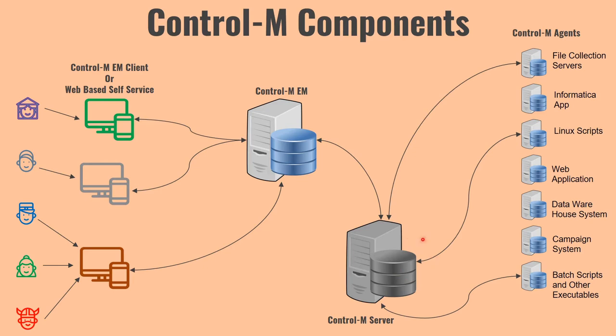Control-M Server is the heart of processing — it is the engine that takes care of managing and ensuring that all jobs which are supposed to run at a specific time are ordered to run. It also manages the execution status of all jobs. This Control-M Server needs to communicate with agents, and those agents are Control-M Agents.